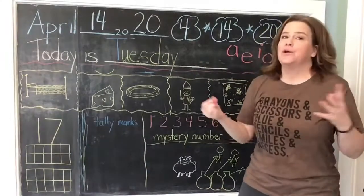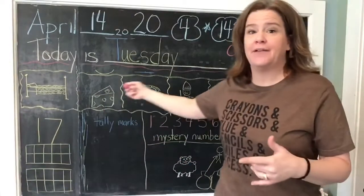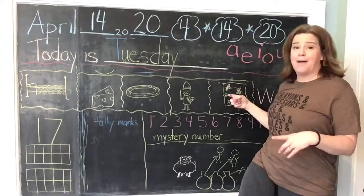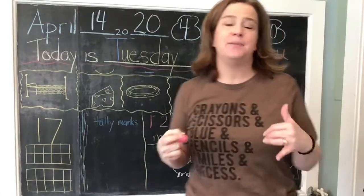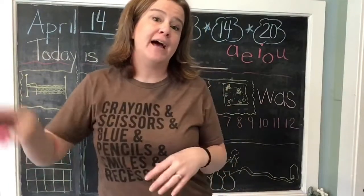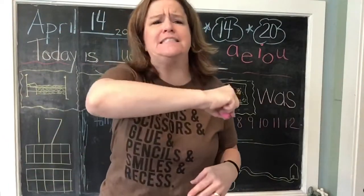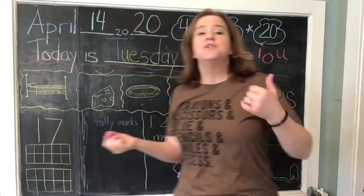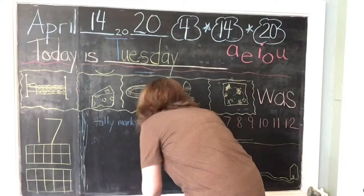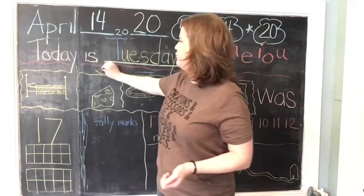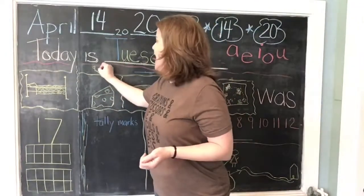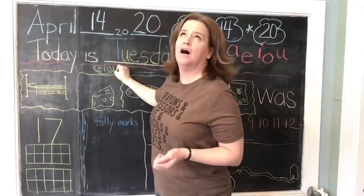Now we are going to think about these words down here: bed, cheese, plate, night, and map. We're going to think about the vowels we hear inside them. Do they have a happy short vowel, or an angry long vowel? If it's a short vowel, we are going to write the word in green. If it's a long vowel — you'll hear the name of that letter — we're going to write it in blue.